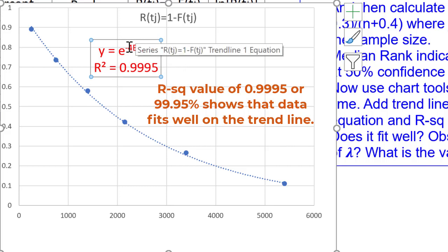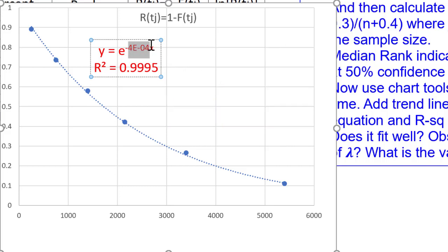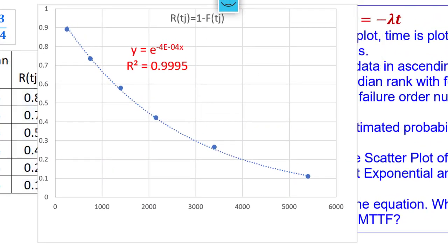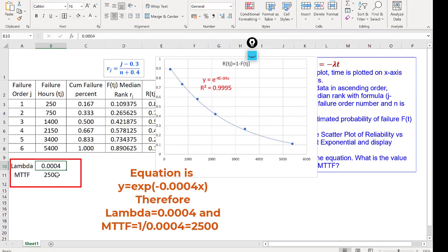Having said that, the lambda is equal to 4 into 10 raised to minus 4 or 0.0004. So, I put lambda equal to 0.0004 and MTTF will be reciprocal of that.